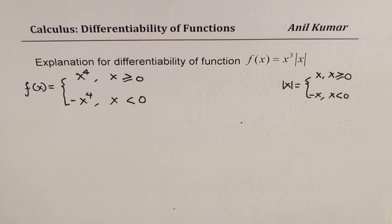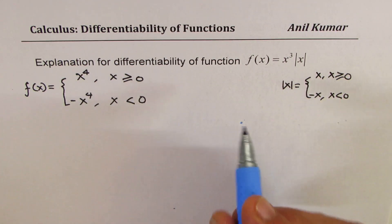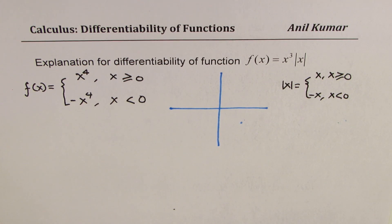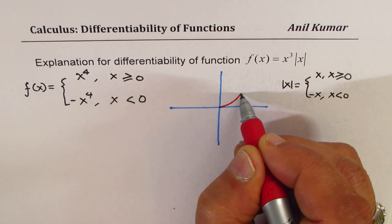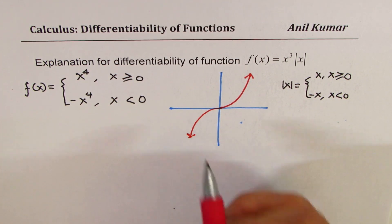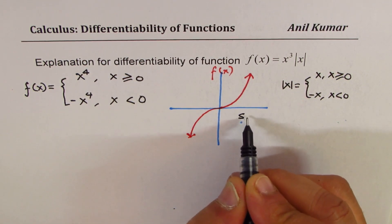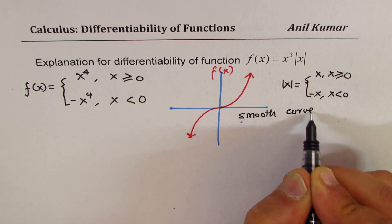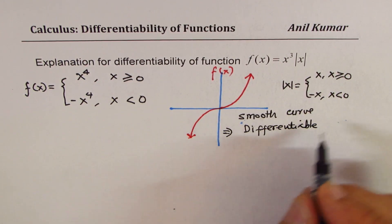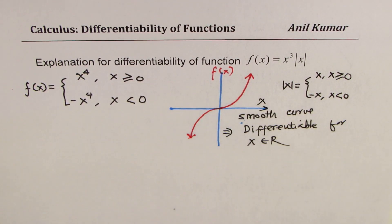If I sketch this function: on the right side of the y-axis, it is like a flattened parabola — x to the power of 4. On the left side, it is kind of like this as well. The result is a smooth curve, and that means it is differentiable for x belonging to real numbers.